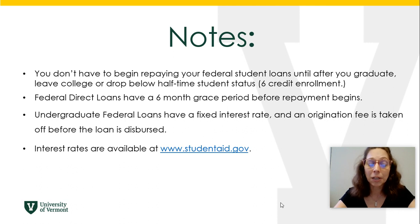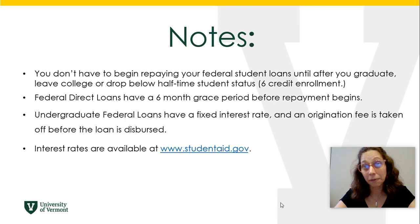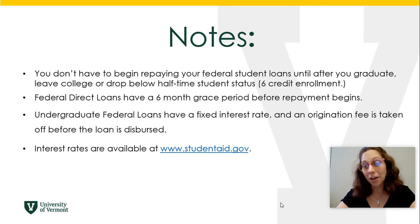For example, if you borrow a thousand dollars, $990 will actually be applied to your account. Undergraduate federal loans also have a fixed interest rate. Those interest rates can be viewed at studentaid.gov.